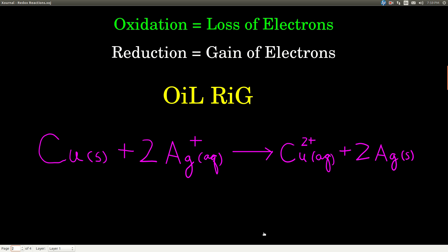And when this happens, whatever loses electrons is said to be oxidized. So oxidation means loss of electrons. Whatever gains electrons is said to be reduced, so reduction is gain of electrons.